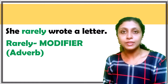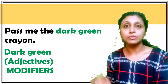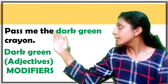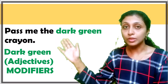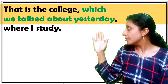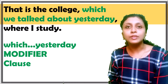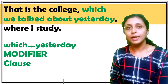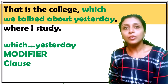It is an adverb that modifies the word 'wrote,' which is a verb. Pass me the dark green crayon — here 'crayon' is the noun, and the words that modify it are 'dark' and 'green,' which are adjectives. That is the college which we talked about yesterday, where I study — here a clause modifies the word 'college.' So modifiers can be adjectives, adverbs, phrases, or clauses.